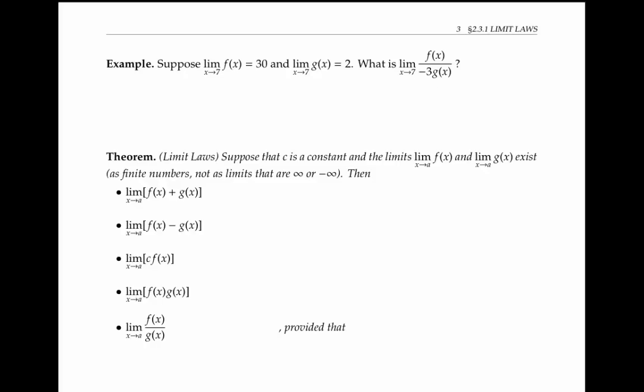Well, since f(x) is heading towards 30 and g(x) is heading towards 2, it makes sense that the quotient should head towards 30 divided by negative 3 times 2, or negative 5.